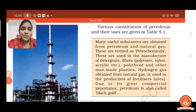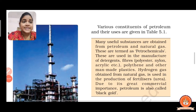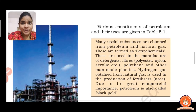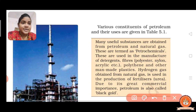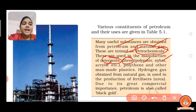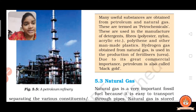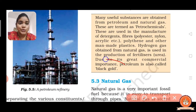Many useful substances are obtained from petroleum and natural gas and these are known as petrochemicals. They are used in the manufacture of detergents, fibers such as polyester, nylon, acrylic, polythene, and other man-made plastics. Hydrogen gas is obtained from natural gas and is used in the production of fertilizers such as urea. Due to its great commercial importance, petroleum is also called 'black gold'.